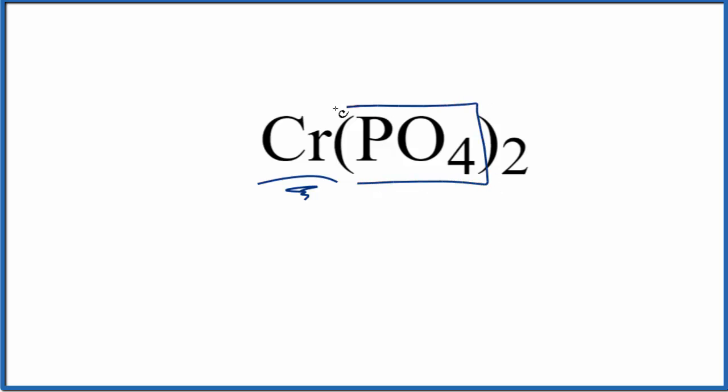And then we have PO4. This is a polyatomic ion. It's a group of non-metals. So we have a metal, non-metals. This is an ionic compound.